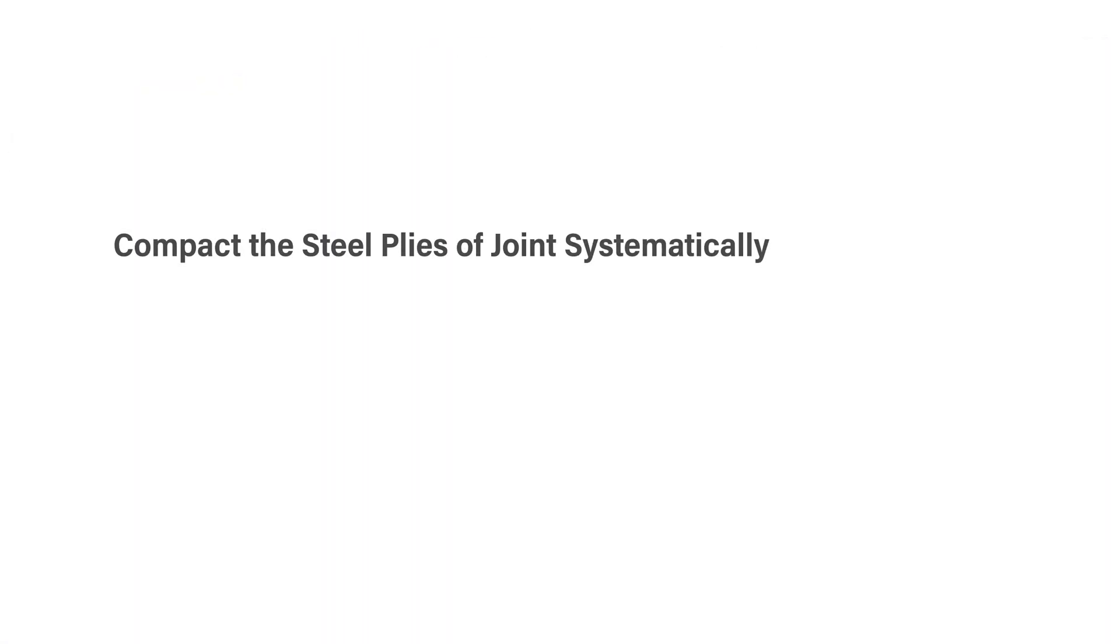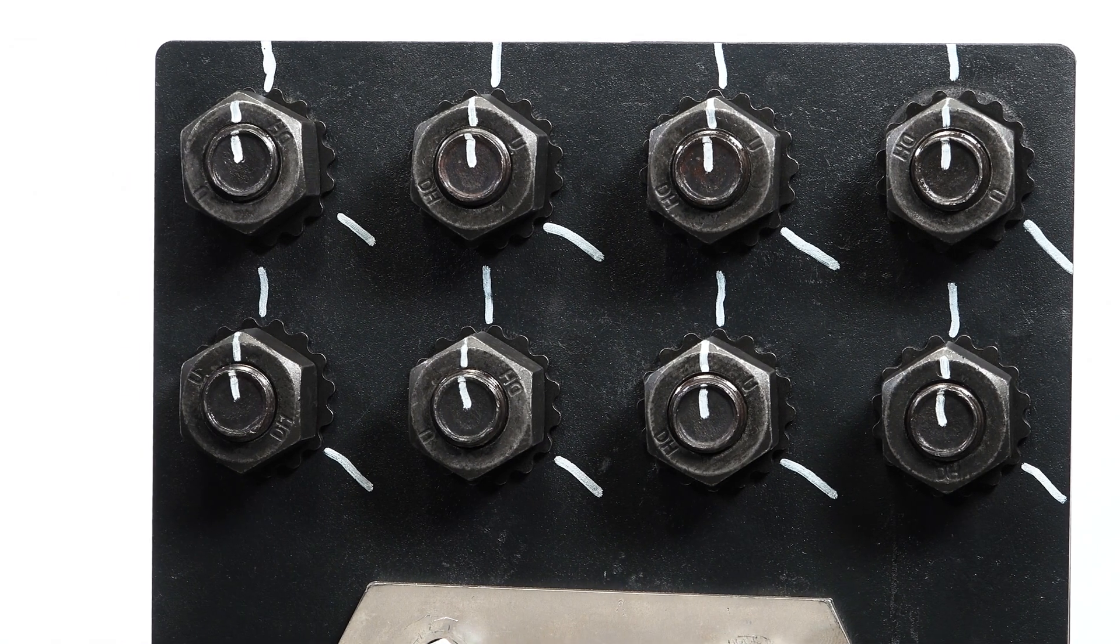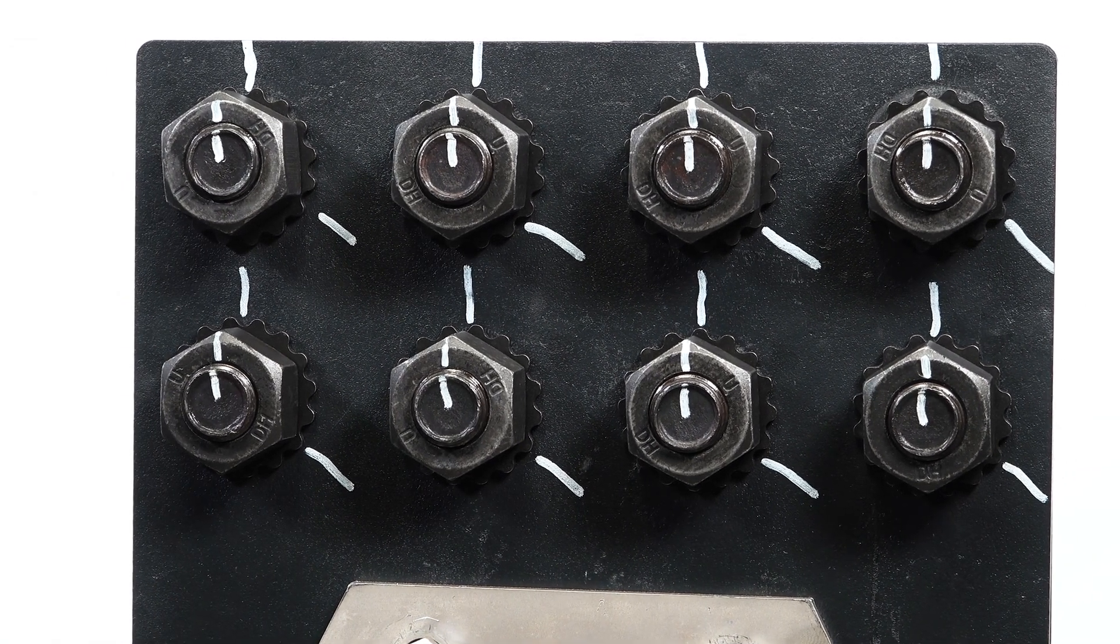Compact the steel plies of the joint systematically from the most rigid part of the joint to the free edges. In large multi-ply joints, it may be necessary to go through the bolt pattern more than once to ensure that the plies have been brought together into firm contact. After snug tightening is completed and the plies have been brought into firm contact, match marking, if required, should be performed.